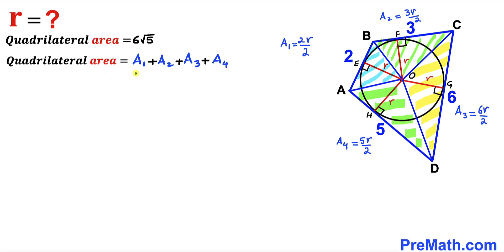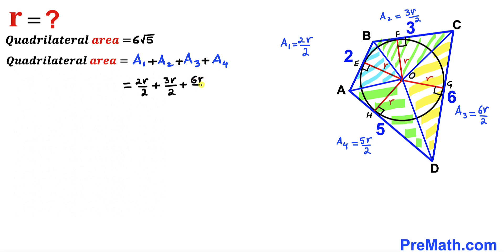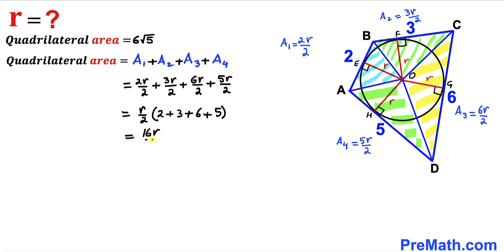The area of cyclic quadrilateral ABCD equals the sum of all four triangle areas: A₁ + A₂ + A₃ + A₄ = 2r/2 + 3r/2 + 6r/2 + 5r/2. Factoring out r/2, we get r/2 × (2 + 3 + 6 + 5) = r/2 × 16 = 8r.